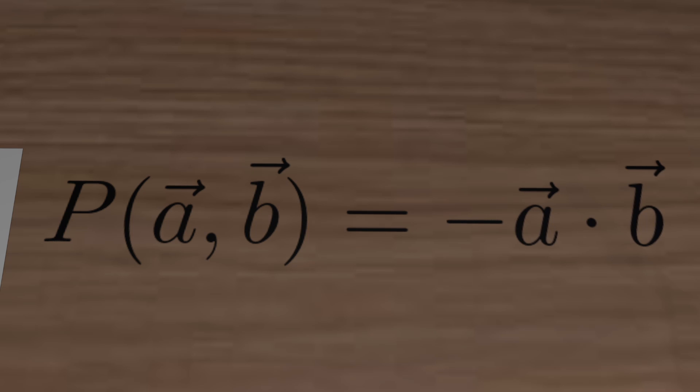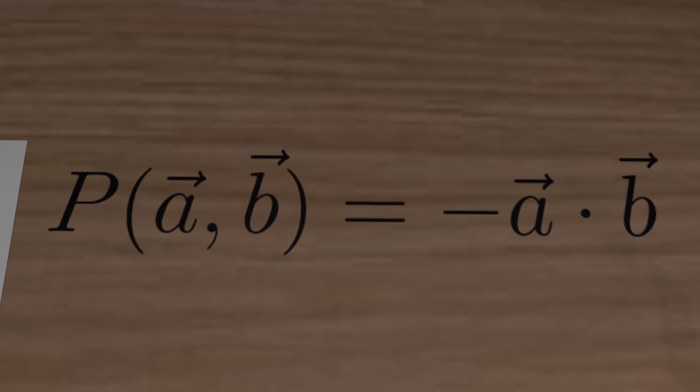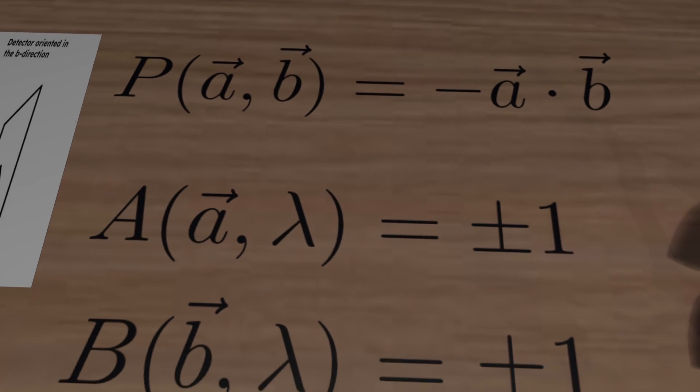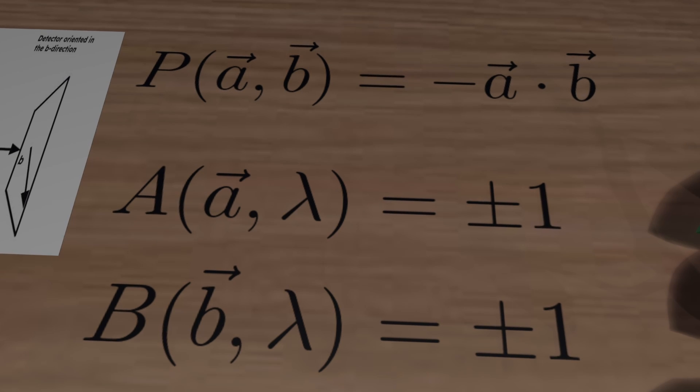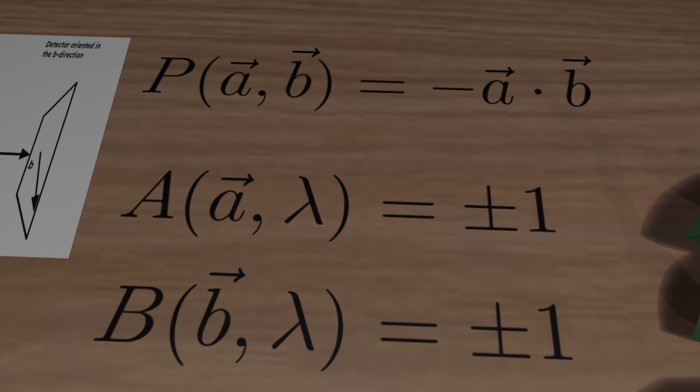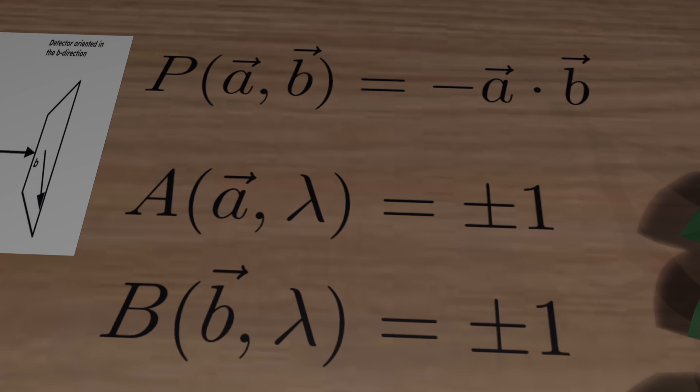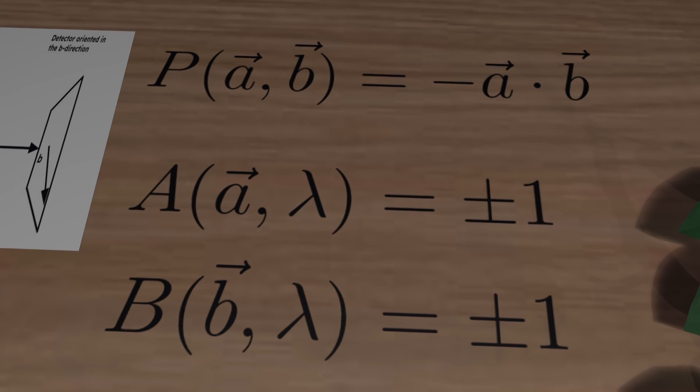If we now call the hidden variable Lambda, local hidden variable theories say that there exists some function that will determine the outcome of the experiment. We call these functions A and B and they are uncorrelated and only depend on the orientation of each detector and Lambda.